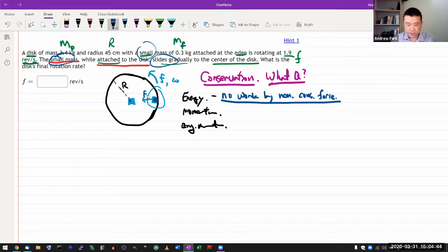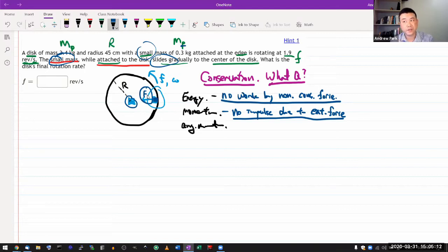And momentum, the condition for momentum being conserved is no impulse due to external force. This situation makes it difficult to conserve momentum for two reasons. This force could easily be an external force, and there's probably a pivot at the center of the disk which applies whatever external force needed to keep it from moving around. So momentum is probably not the conserved quantity.